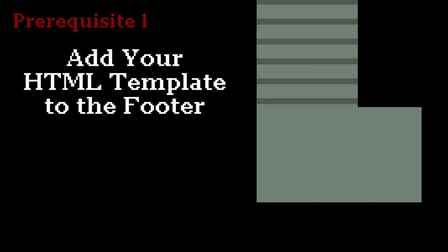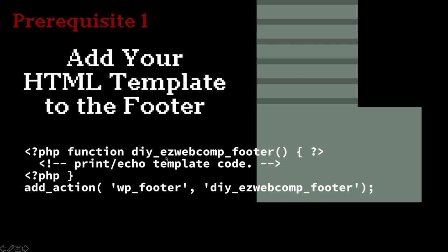The first prerequisite is adding the HTML template to the footer. You create a function — say, easy_web_comp_footer — that echoes the template element and everything within it, then hooks it to wp_footer. As long as your theme calls wp_footer, it will output every time it's needed.